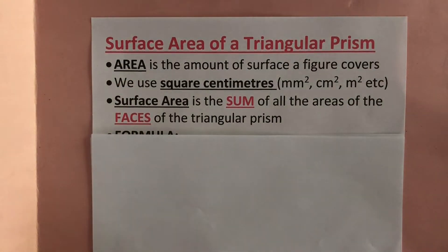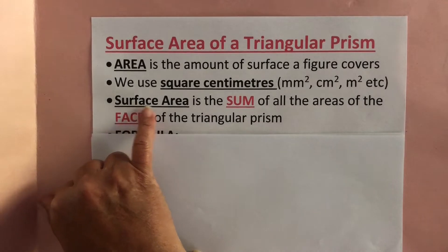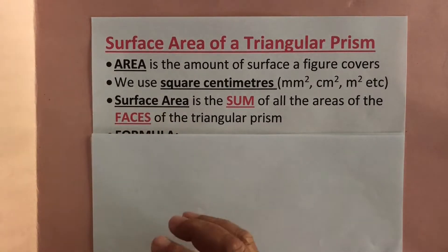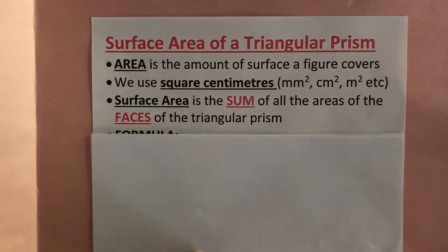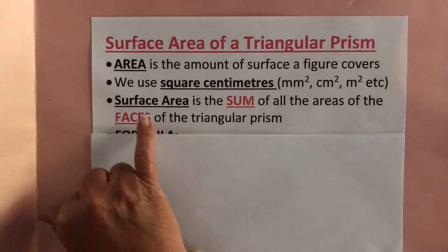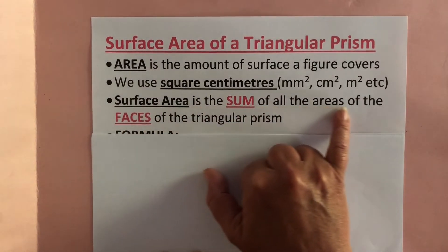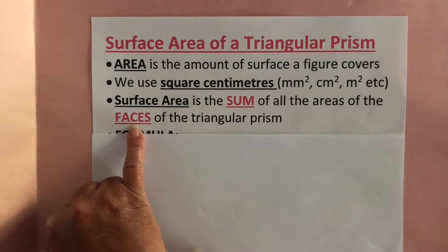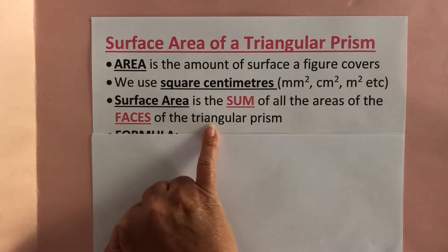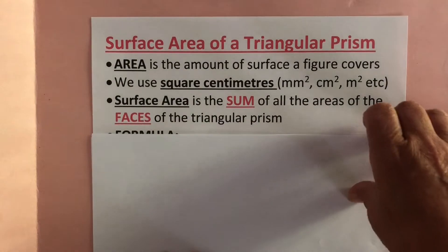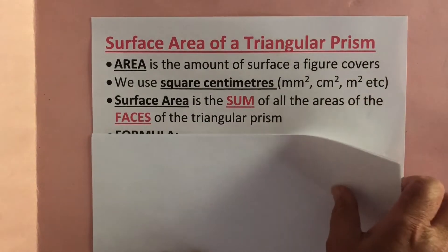Area is something that we've been doing for a long time, since grade three actually. But the difference here is that we're going to be doing surface area of 3D shapes — today we're going to be doing triangular prisms, and we're going to review rectangular prisms as well. What we're doing is finding the sum of all the areas of the faces of whatever prism you're working with. I do have a formula to share with you but I'll do that in a minute.